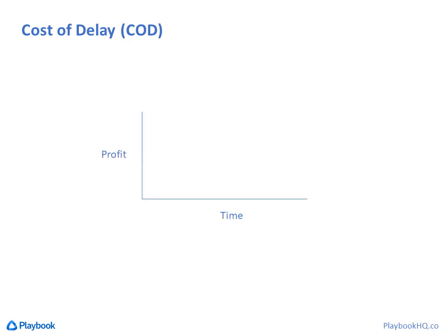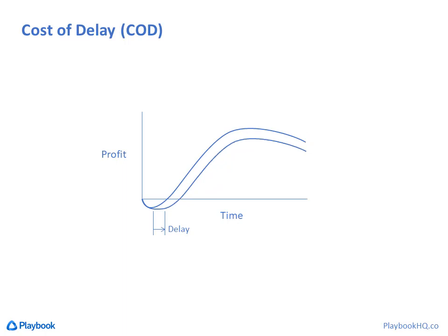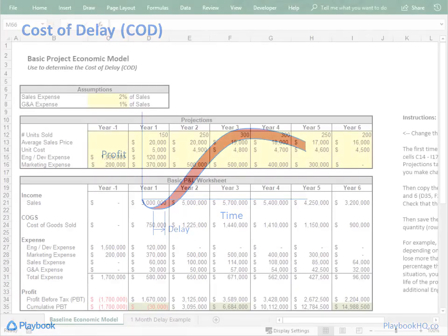I'll show you a simple graph. The axes are profit and time, so the profit for the lifecycle of this product might look like this, including the time prior to launch when we're spending money on development. When a product is one month late to market, you might think we lose just the sales from that month — but that's rarely the case. We spend more time and money to launch, and when we ramp up we don't reach the same sales volume, so we lose the difference between the two curves for the entire lifecycle.